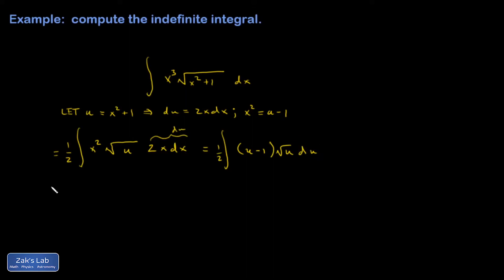So I have what's looking like a lot nicer integral now. So what I'm going to do to integrate this is distribute the square root of u, that's u to the one half, and then I'll use the power rule on each of the terms that are left over.